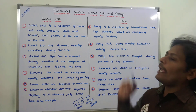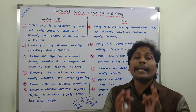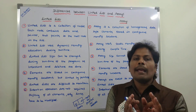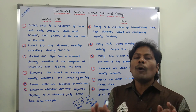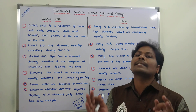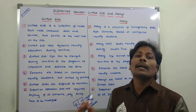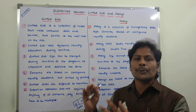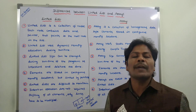While in the case of arrays, an array is a collection of homogeneous data type elements that are stored in contiguous memory locations.